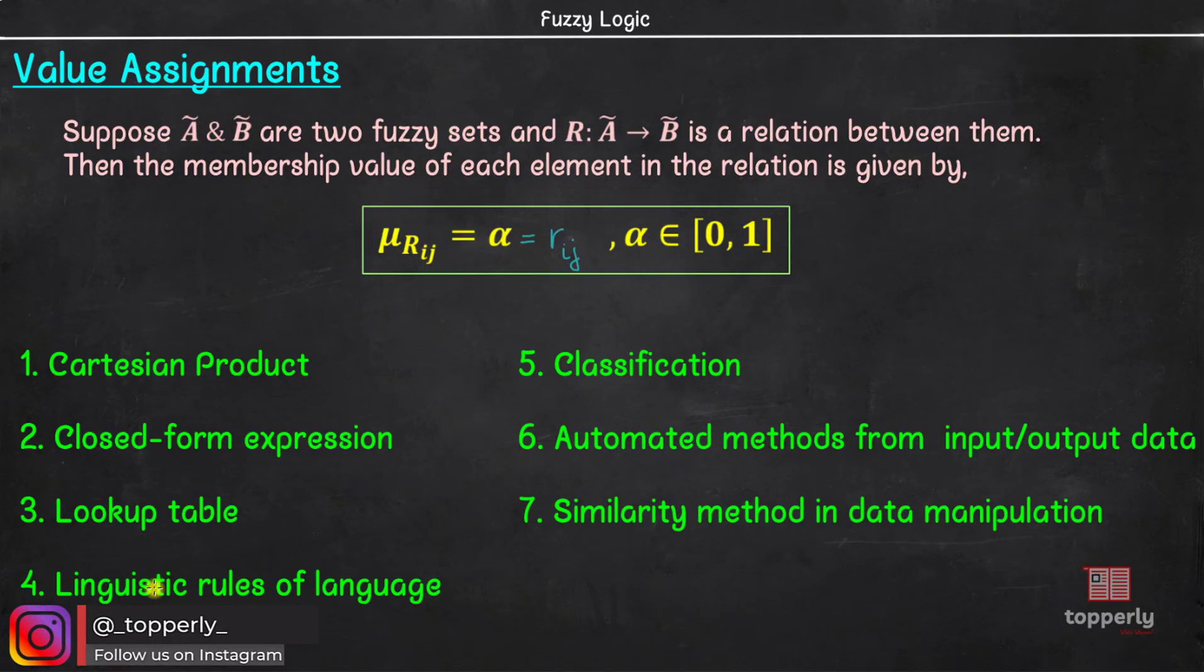There are seven different ways to develop the value that characterizes the relation R. They are Cartesian product, closed form expression, lookup table, linguistic rules of language, classification, automated methods from input-output data, and finally similarity method in data manipulation. The first method, the Cartesian product, is to calculate the relations from the Cartesian product of two or more fuzzy sets. This is already discussed in detail in the past few lectures. Please visit lectures 6 and 7 in our Fuzzy Logic playlist if you are not familiar with this method.